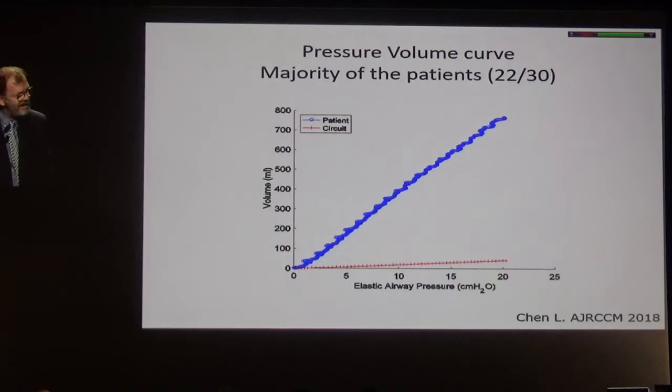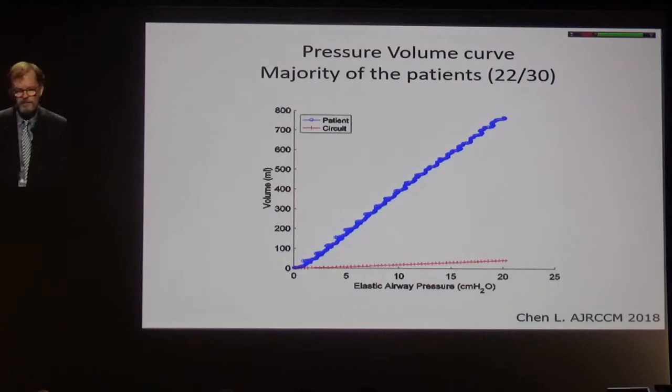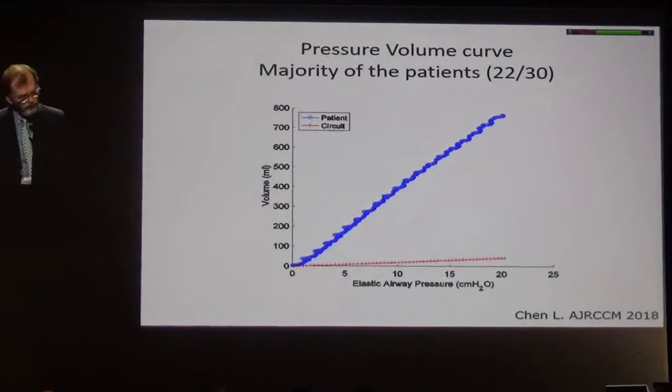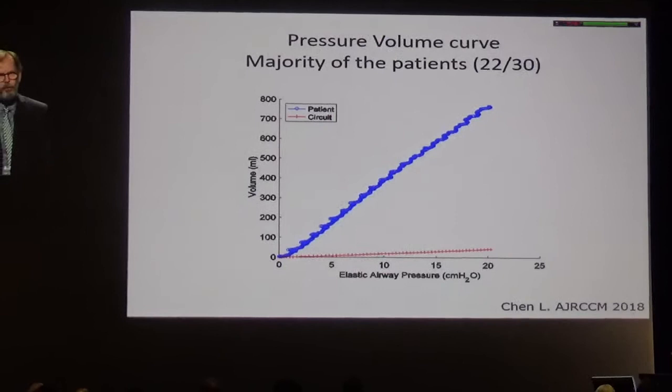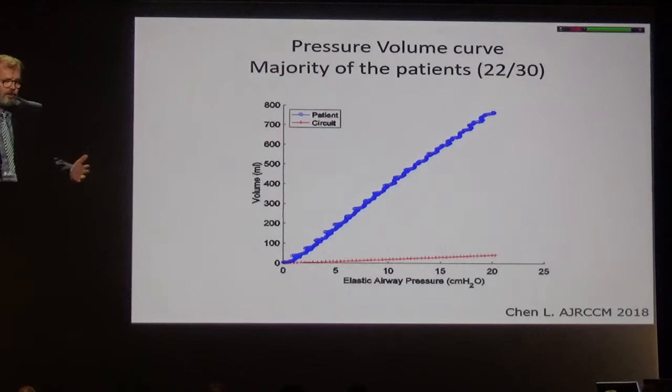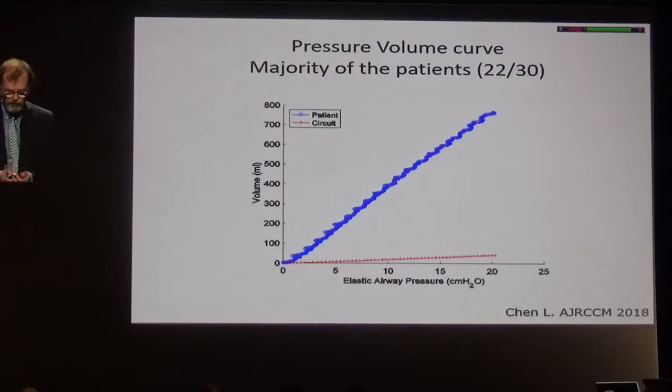the slope gives you the compliance and the possibility to explore changes in the slope, which have been called low inflection point or upper inflection point. There is also a red curve simply to indicate the compliance of the ventilator circuit. Of course, if you put pressure in tubings you will compress gas, and this compliance of the tubing is much, much lower than the compliance of the respiratory system.